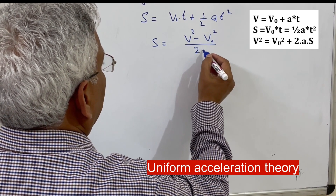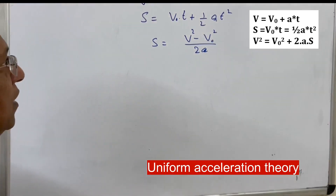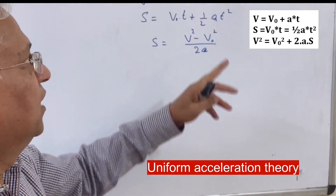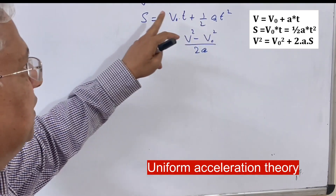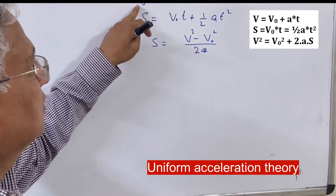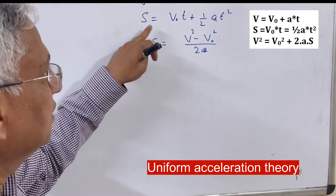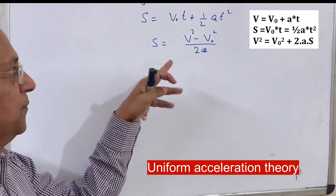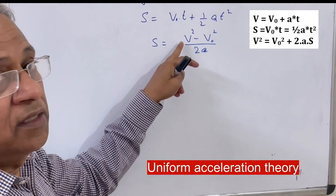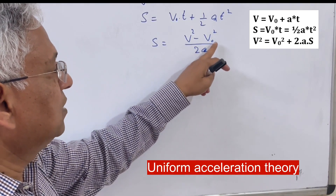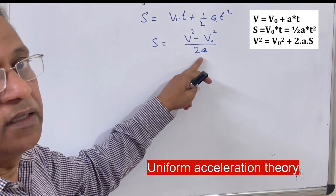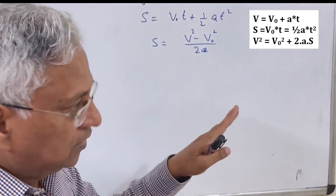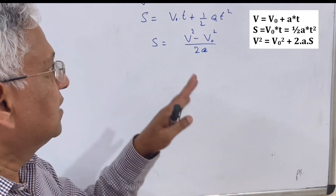The uniform acceleration equations also include s = (v² - v₀²)/(2a), where v is the final velocity, v₀ is the initial velocity, a is the rate of acceleration, and t is the time. These equations allow you to find speed after time t, distance traveled while accelerating, or distance required to reach a final speed. However, in actual practice, acceleration is not uniform.